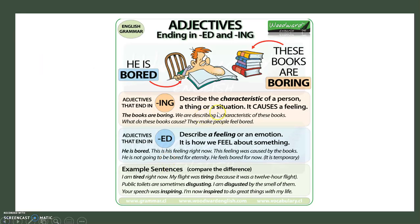So if we go back and look at this again, the -ed is describing how he feels, and the -ing is describing the books. I'm tired right now — it describes how I feel. My flight was tiring because it was 12 hours — here we're describing the flight. Public toilets are sometimes disgusting. I am disgusted by the smell of them. So here I'm describing the public toilets — disgusting — and here I'm describing how I feel — I am disgusted.